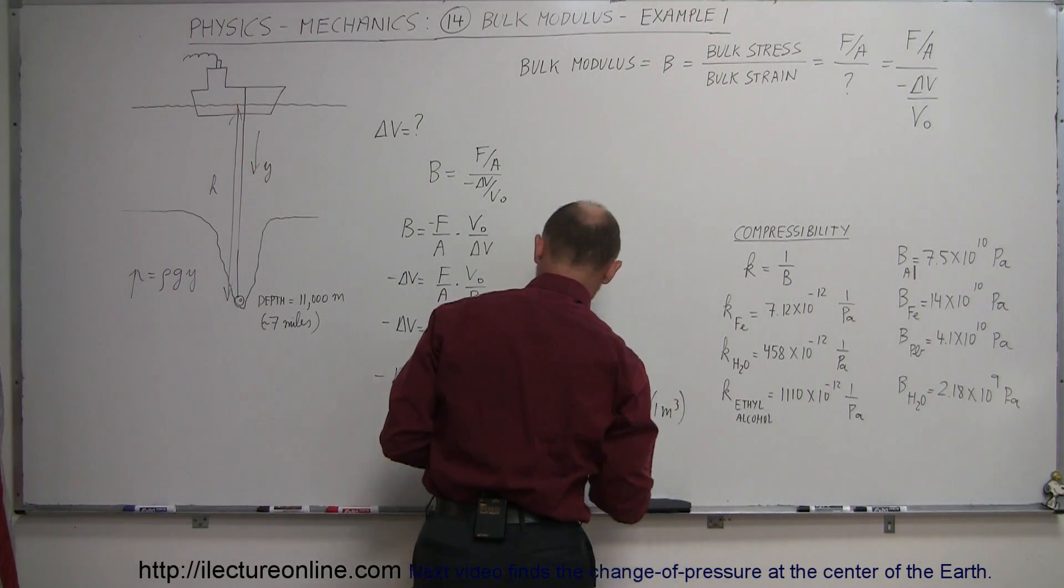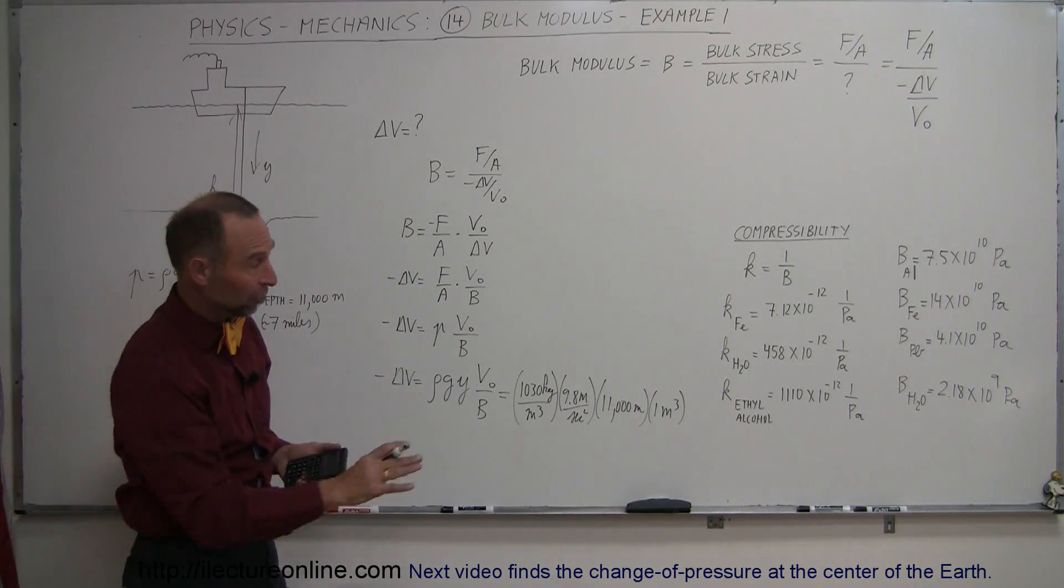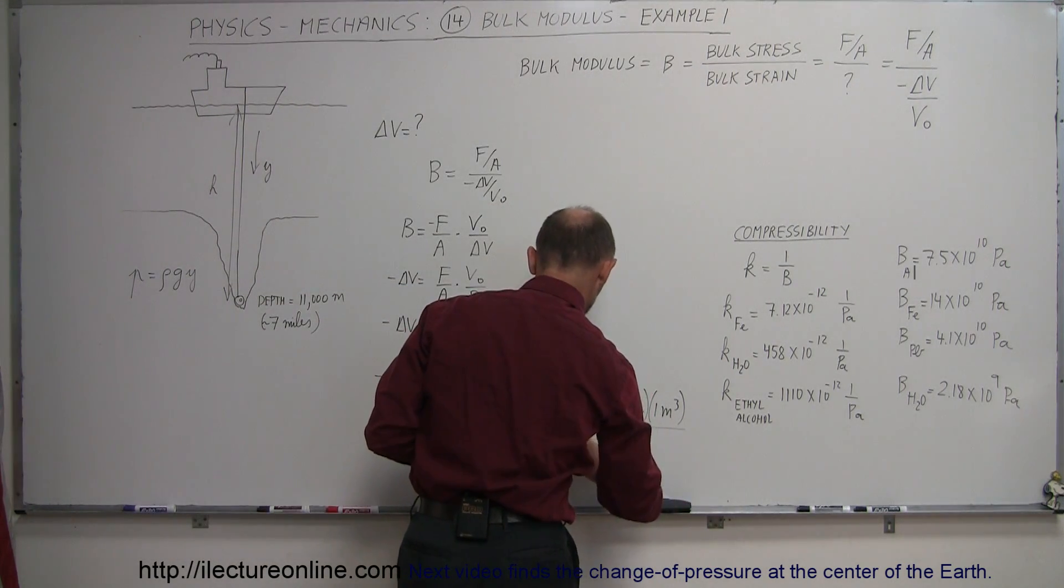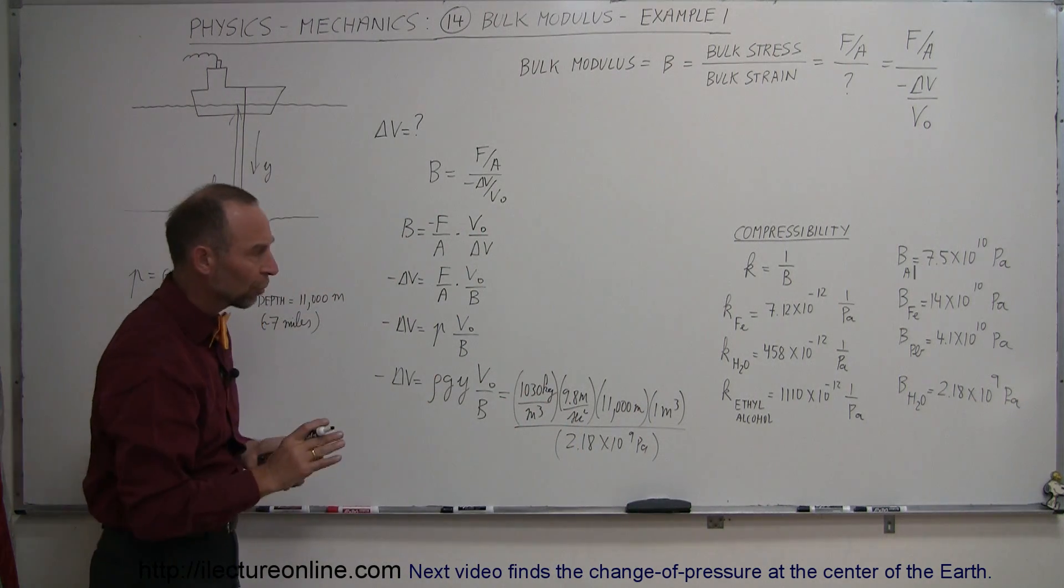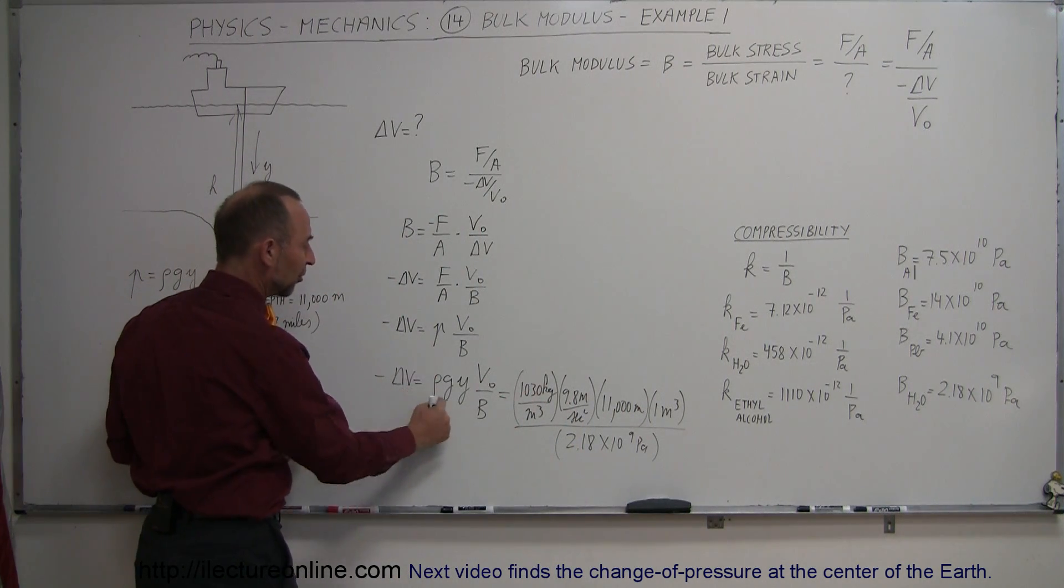And the original volume is 1 cubic meter. So, that was by definition. We're just going to use that. And now, of course, the bulk modulus, we just calculated. We're going to divide the whole thing by 2.18 times 10 to the 9th pascals.